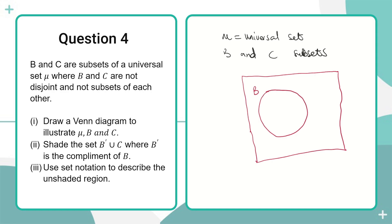So we can have our B circle here and a C circle here, and they intersect each other. We have drawn a Venn diagram for B, C, and mu. Within the same Venn diagram, we are going to shade the set B complement union C. When we talk about the complement of a set, we are looking at the members that are in the universal set but not in that particular set.